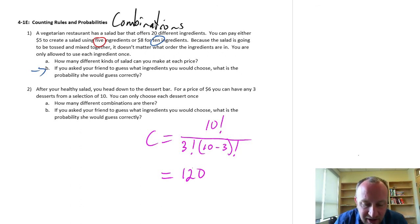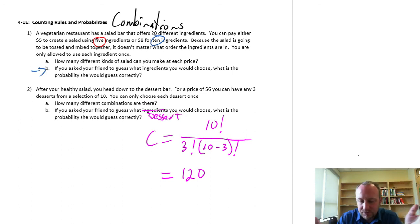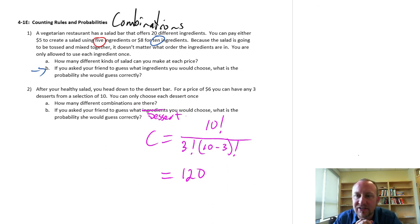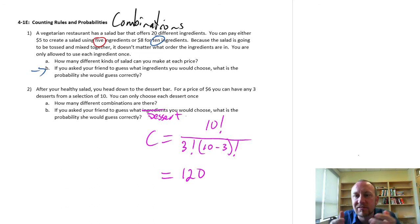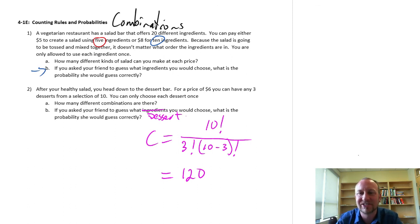So now if I ask my friend to guess what desserts you would choose, there's a 1 in 120 chance that my friend would guess the right combination of desserts for me. Not as risky as having them guess which salad I want, but still I'm probably better off going to pick my own desserts. I hope that helps you understand the concept of combinations a little better. Thanks for watching.